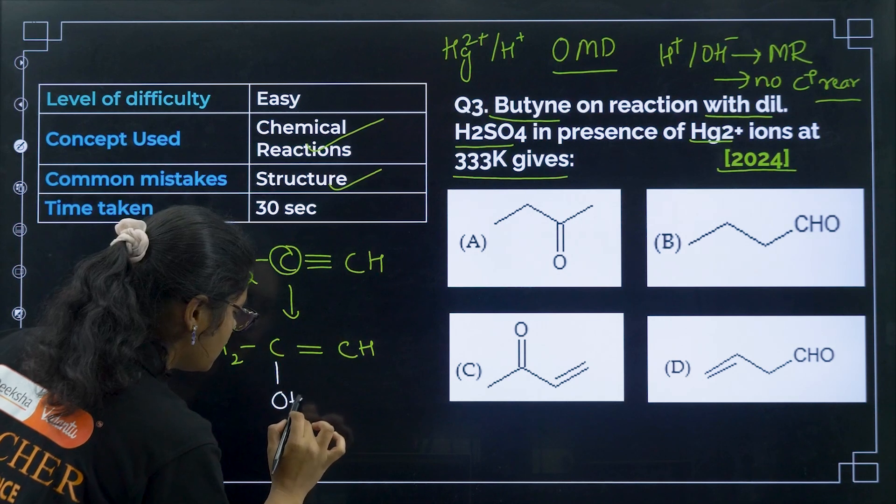Question 36 from 2014 — match the following. Acetic acid has an alpha hydrogen so it undergoes HVZ reaction: 1 matches C. Sodium phenoxide undergoes Kolbe's reaction: 2 matches D. Methyl cyanide undergoes Stephen reduction: 3 matches A. Toluene can undergo Friedel-Crafts reaction: 4 matches B. Correct answer is option number C.